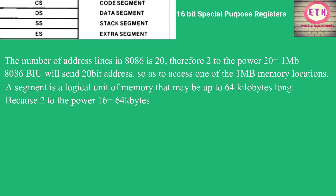The starting address of a segment will always be changing and will not be fixed. The 8086 microprocessor does not work with the whole 1 MB memory at any given time; it works only with four 64-kilobyte segments within the whole 1 MB memory. We can see one way of positioning four 64-kilobyte segments within the 1 MB memory space of an 8086 microprocessor.